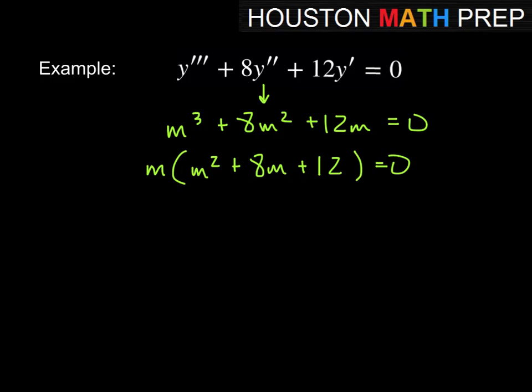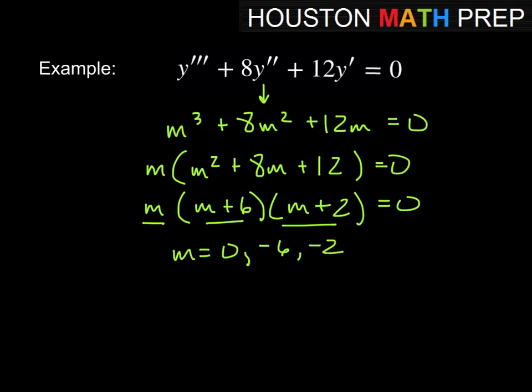We can factor this quadratic factor, and we'll get m plus 6 times m plus 2 when we're fully factored. So when we set each of these factors equal to 0, we will get that m is equal to 0, negative 6, and negative 2 in any particular order.